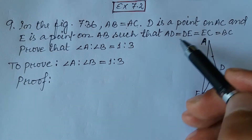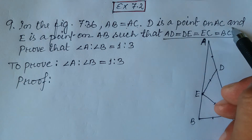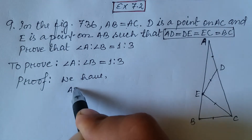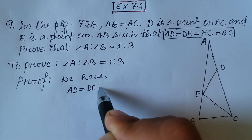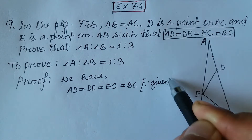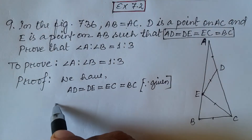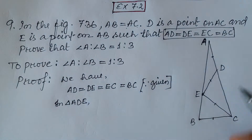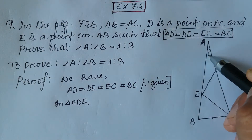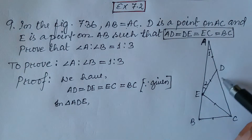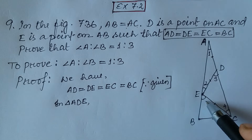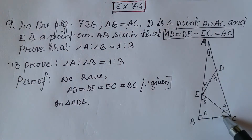To prove this, we start with the given condition that AD equals DE equals EC equals BC. To simplify our work, let us name the angles: this angle as 1, this angle as 2, this angle as 3, this angle as 4, this angle as 5, this angle as 6, and this angle as 7.